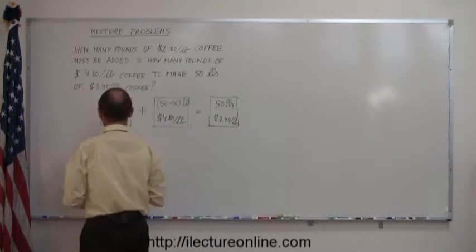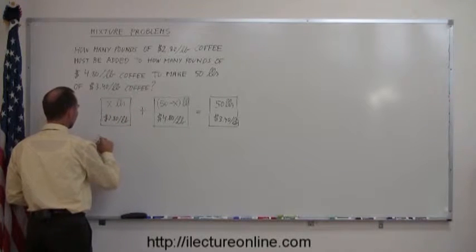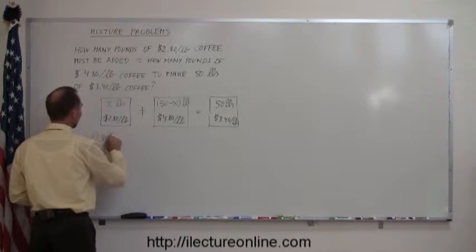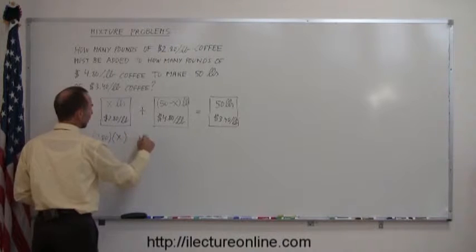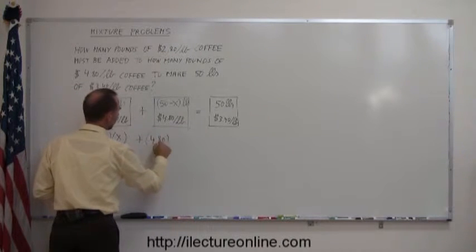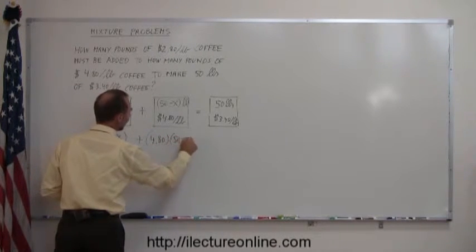So all we need to do is multiply these two numbers together. So we have $2.80 times X plus $4.80 times 50 minus X,